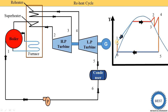From this TS diagram, you can see the area is increased. This increased area means the amount of work done is increased. So the reheat cycle is a method of improving the efficiency of the Rankine cycle — by providing the reheat cycle in the Rankine cycle, the efficiency of the Rankine cycle is increased.